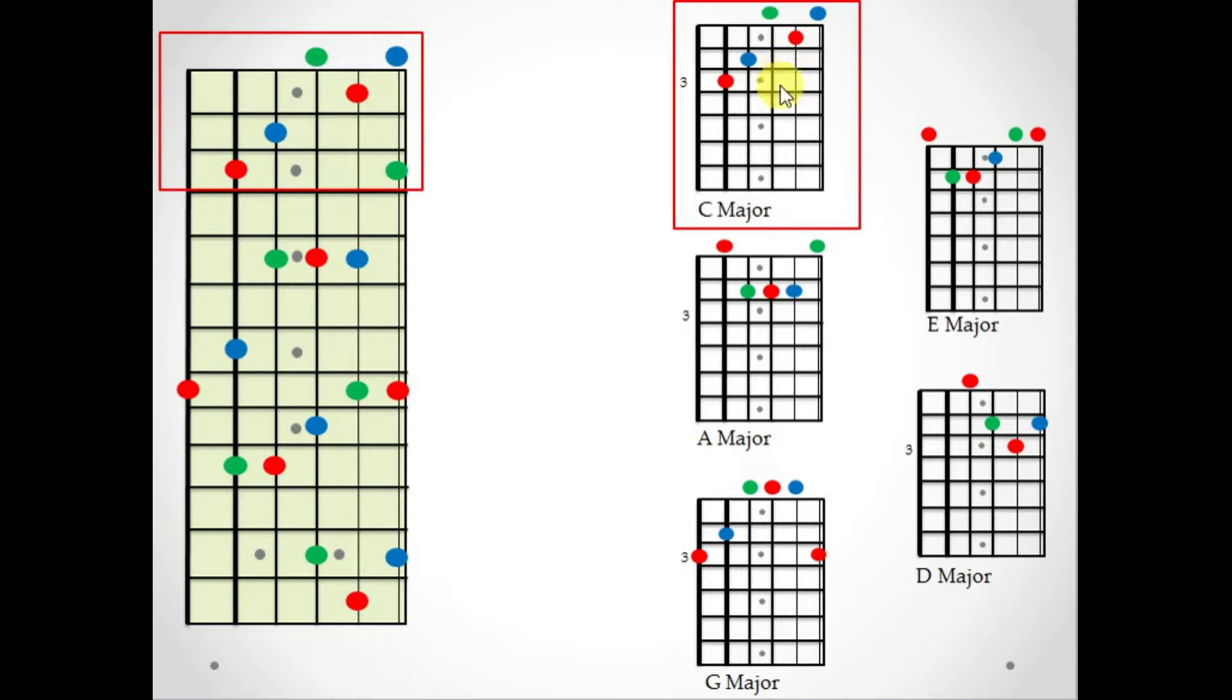First up, we got our C major chord, our C shape. Well, that's just right here. Now I know this note really isn't in there, so we'll just exclude it for now, but this is the C major shape.